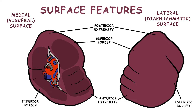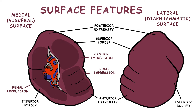Let's examine some features of the visceral surface. There are three impressions: the renal impression from the left kidney, the gastric impression from the stomach, and the colic impression from the left colic flexure. The hilum allows passage of the splenic artery and splenic vein.